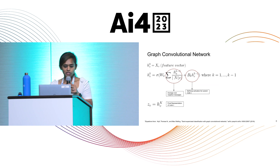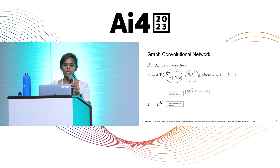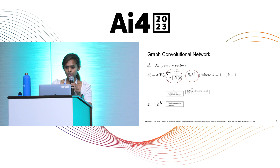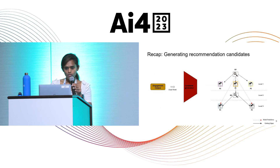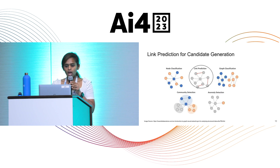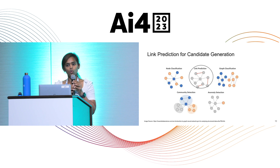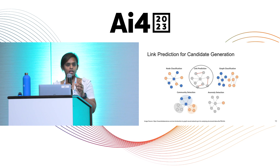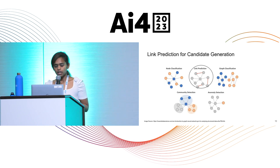For any math nerds here, this is the formulation of a graph convolutional network, which is a very simple graph neural network — but I'll quickly skip over it given the time constraint. Coming back to the status quo: we have an engagement corpus, we want to generate candidates, and we want to use a graph model to do so. This task of identifying new edges in a graph is called link prediction, or edge prediction.